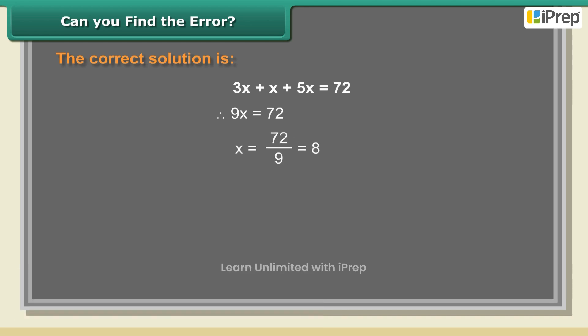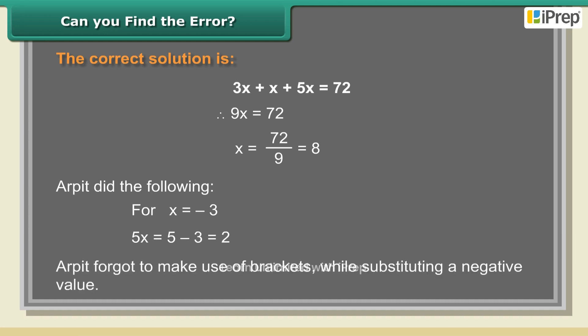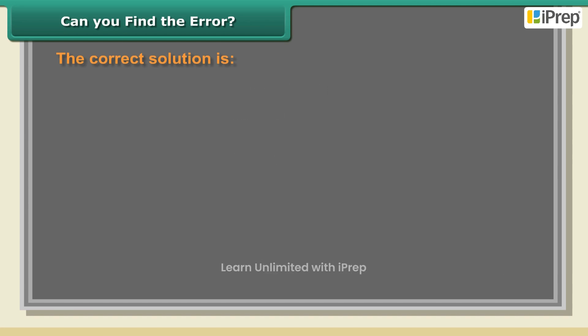Arpit did the following: for x = -3, 5x = 5 - 3 = 2. Is his procedure correct? Arpit forgot to make use of brackets while substituting a negative value. The correct solution is: 5x = 5(-3) = -15.